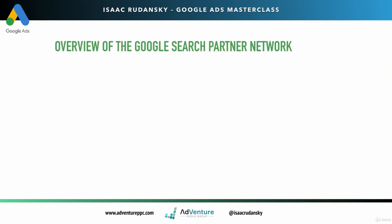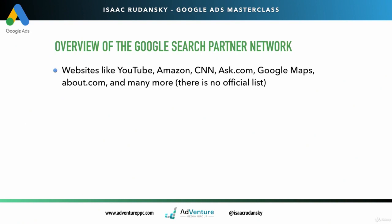The search partner network includes sites like YouTube, Amazon, ask.com, Google Maps, about.com, many, many others.